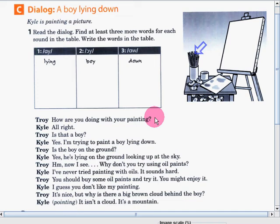How are you doing with your painting? All right, is that a boy? Yes, I'm trying to paint a boy lying down. Is the boy on the ground? Yes, he's lying on the ground looking up at the sky. Hmm, now I see. Why don't you try using oil paints? I've never tried painting with oils. It sounds hard. You should buy some oil paints and try it. You might enjoy it. I guess you don't like my painting. It's nice, but why is there a big brown cloud behind the boy? It isn't a cloud. It's a mountain.